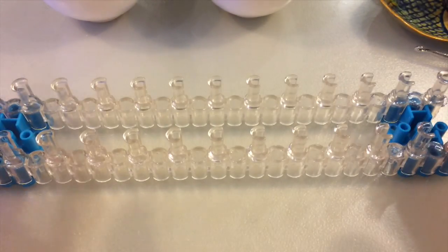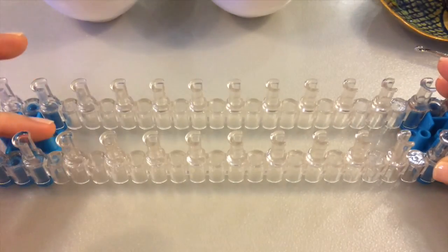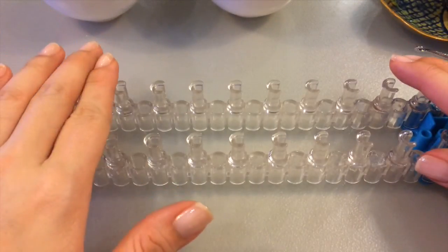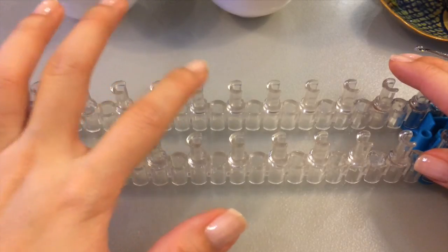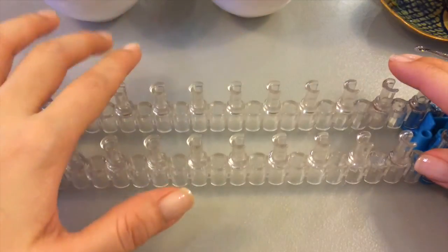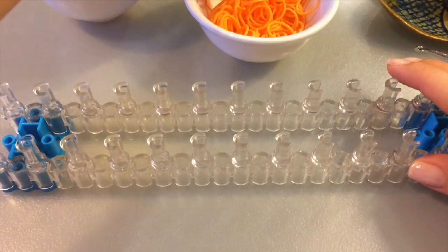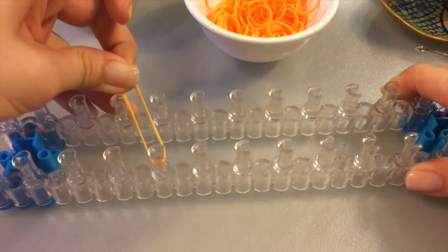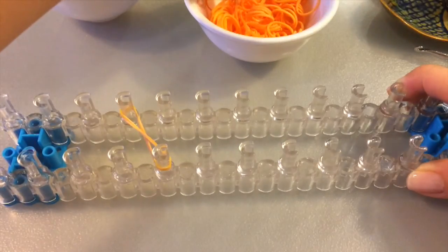Alright, let's start making our uni. So you need your loom, remove the center row. We will only be using seven pairs of pegs: one, two, three, four, five, six, seven. And let's start off with our yellow orange bands. Take two bands, create X's across the seven pairs.